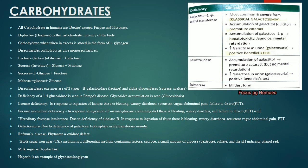One-liners from carbohydrates: all carbohydrates in humans are dextro except fucose and iduronate. Dextrose (D-glucose) is the carbohydrate currency of the body. Excess carbohydrates are stored as glycogen. Disaccharides on hydrolysis give monosaccharides: lactose gives glucose plus galactose; sucrose gives glucose plus fructose; maltose gives glucose plus glucose. Deficiency of 1,4-glucosidase is seen in Pompe's disease with glycogen accumulation.